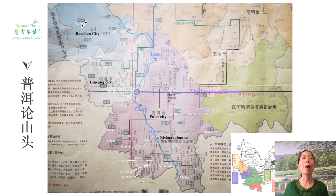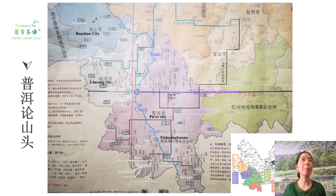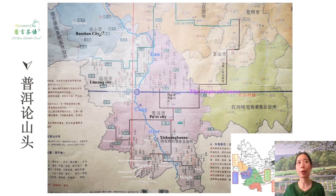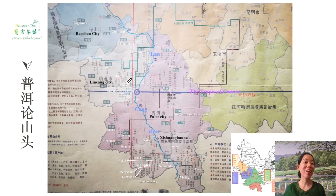Baoshan is where tea is mostly produced as black tea. For example, Dianhong — you may have heard of Dianhong. Right next to Baoshan city is Lincang city.